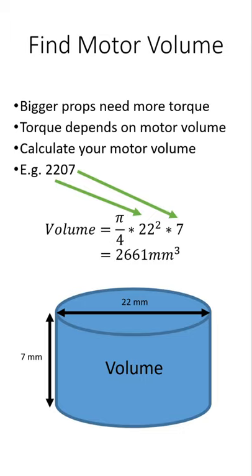And to calculate your motor volume, you just use the equation here. Pi over four times the stator diameter squared times the height.